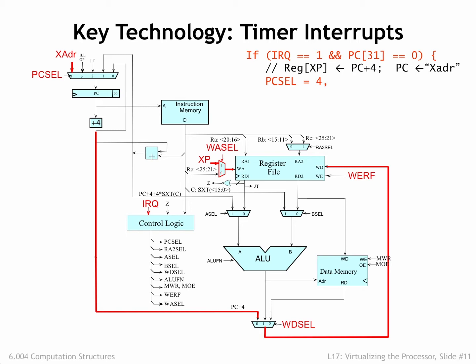Note that PC31, the supervisor bit, is being set to 1 and the CPU will be in kernel mode as it starts executing the code of the interrupt handler. The WA cell, WD cell, and WORF control signals are set so that PC+4 is written into the XP register in the register file. And finally, MWR is set to 0 to ensure that if we're interrupting a store instruction, its execution is aborted correctly.